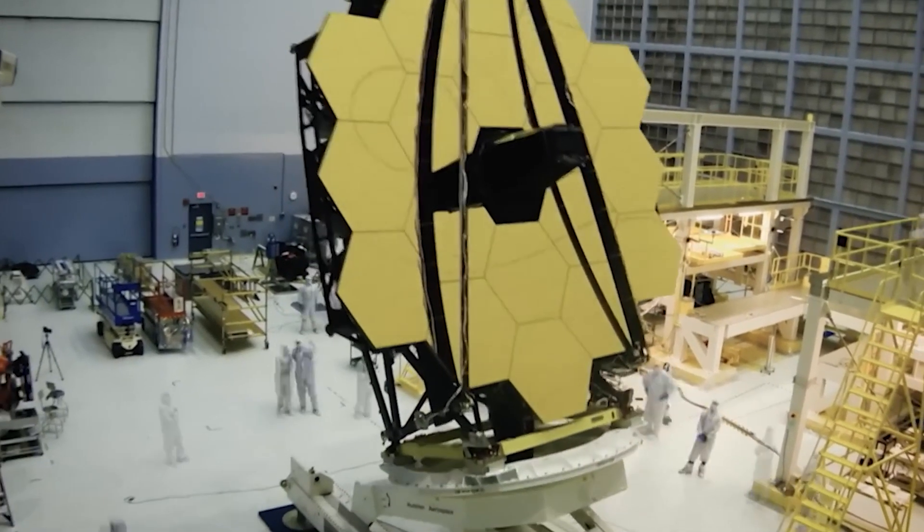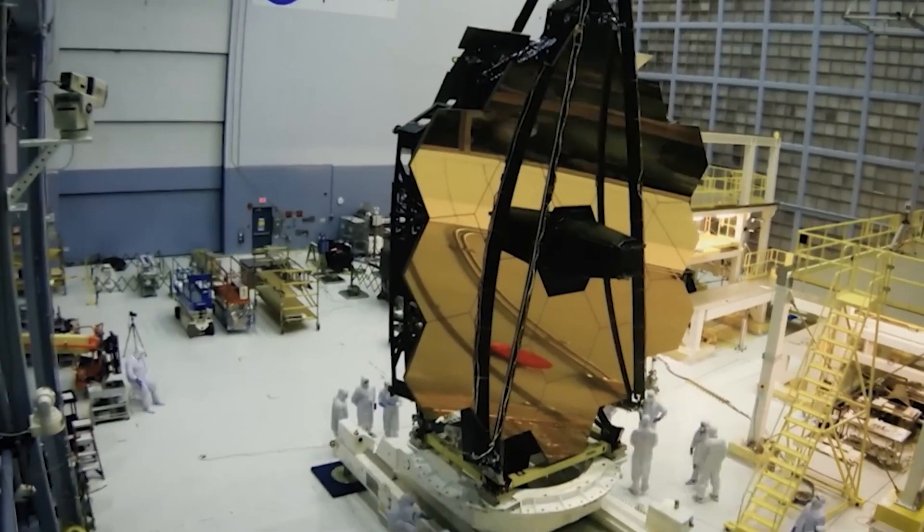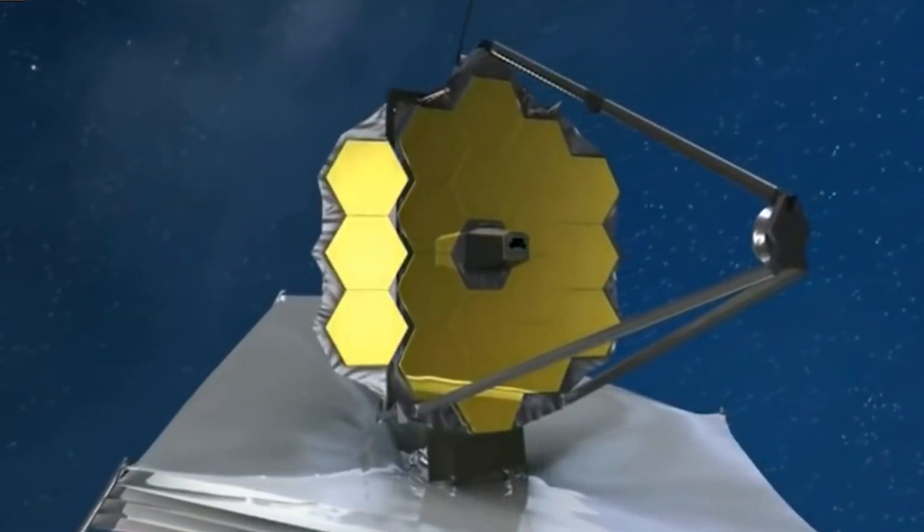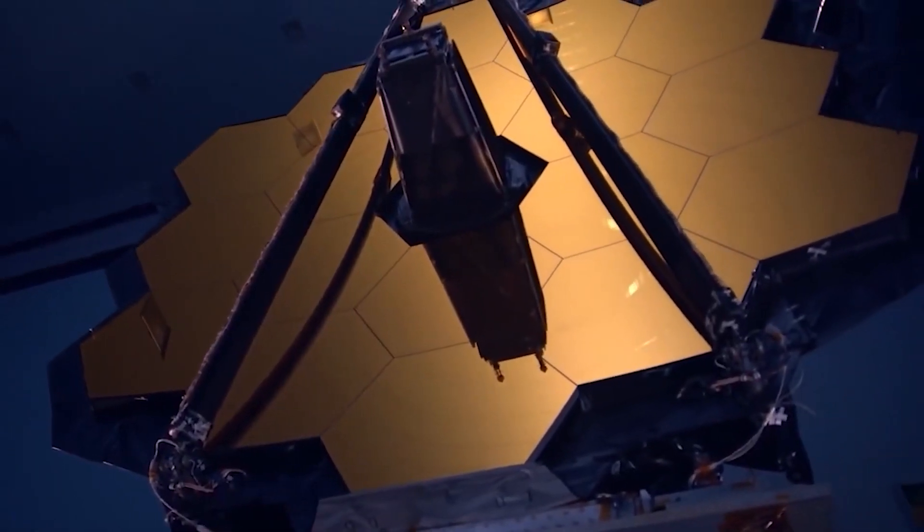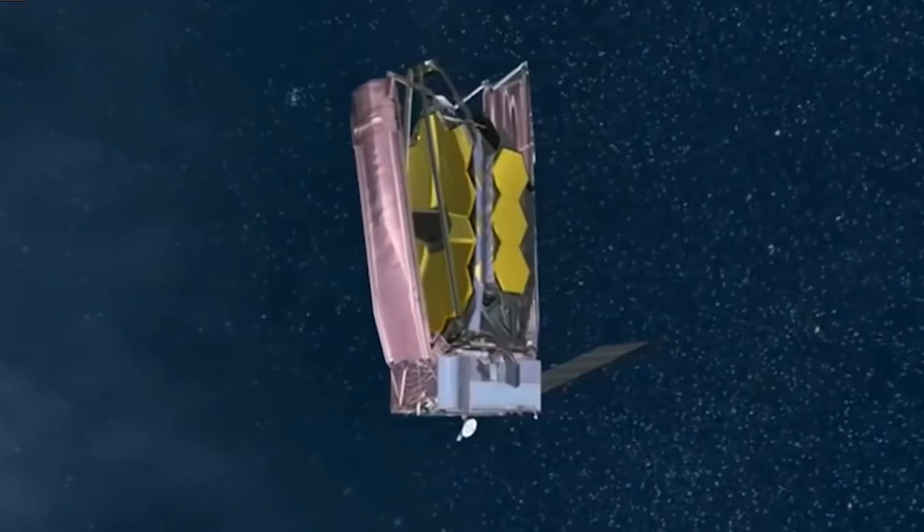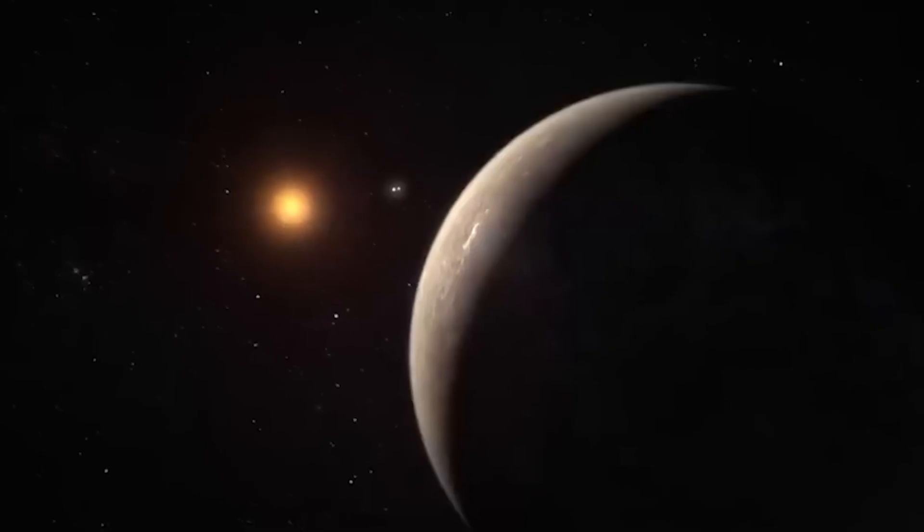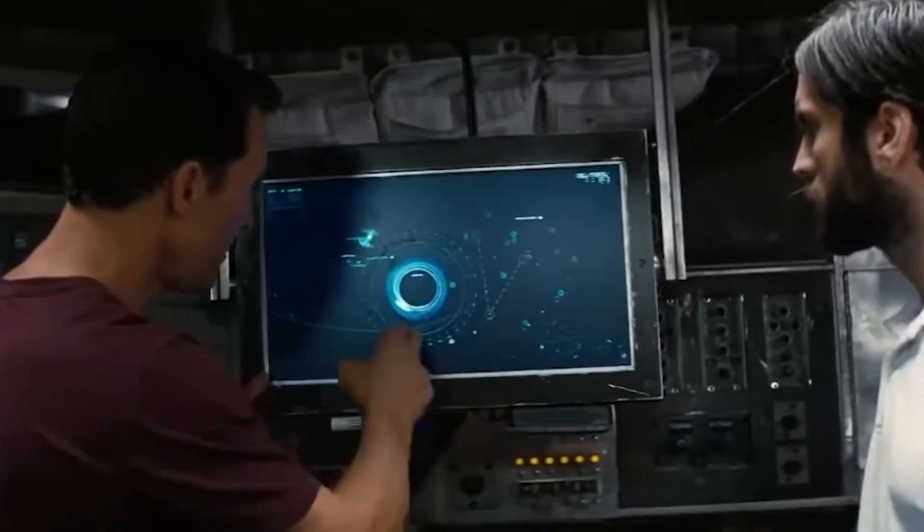Despite being one of the most expensive and difficult to build space observatories, the James Webb Space Telescope has already provided groundbreaking observations and conclusions since its launch. Its main objective is to investigate exoplanet atmospheres in order to search for signs of extraterrestrial life.